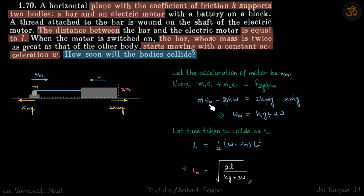A1 is given as Omega. M not given, sorry. We are assuming it to be Omega M. So this is minus M2A2 is minus 2M Omega. From here, we get the value of Omega M. So now the time to collide is given by our standard equation of motion.